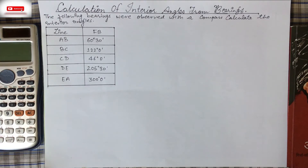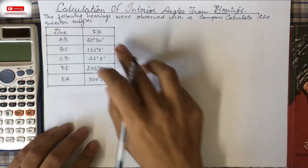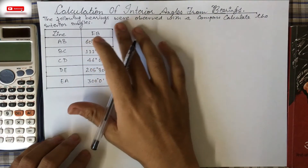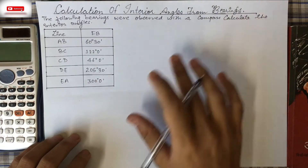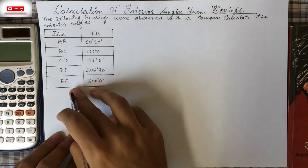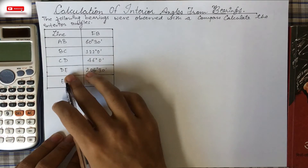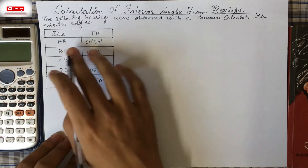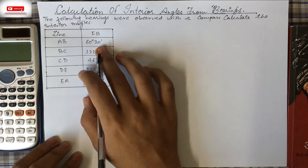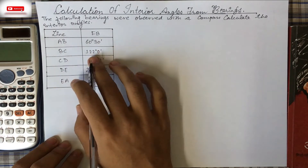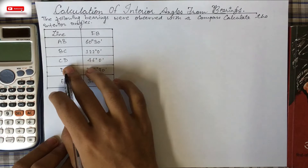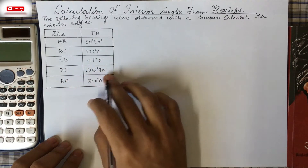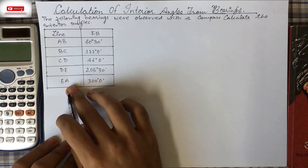Without any delay, let's work out today's question. Our question is based on bearing of a line, and we have to calculate the interior angles from the bearings. The given lines are AB, BC, CD, DE, and EA. The bearing of AB is 60°30', BC is 122°0', CD is 46°0', and DE is 205°30'.